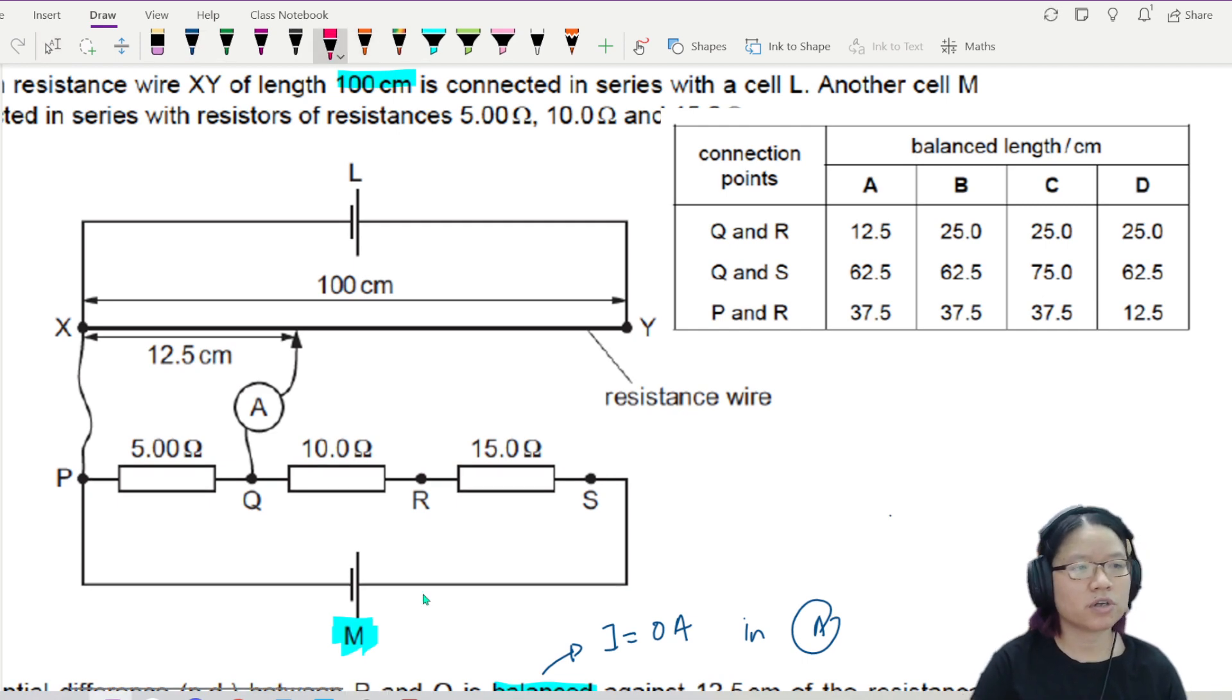So what the question wants from us is to figure out what is the new balance length when I take this connection, is to figure out what is the new balance length of resistance wire. And then I put it at R or I put it at S or I put it Q and R. This P and Q can change, can connect across different resistors. One by one first. Let us settle the circuit M first. Or in other words, let me settle this loop first.